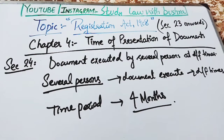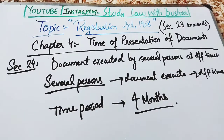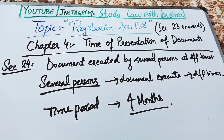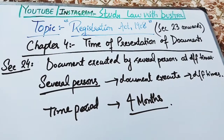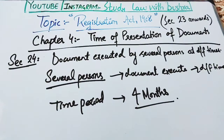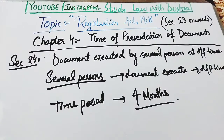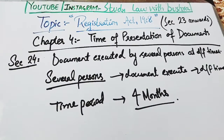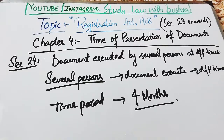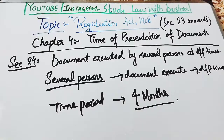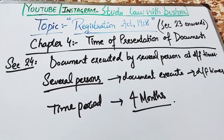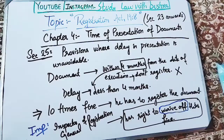Next है section 24 जो deal कर रहा है documents executed by several persons at different times. यह क्या कह रहा है कि जब बहुत सारे लोगों ने एक document को execute कराया लेकिन different times में, तो वो document registration के लिए within four months from the date of such execution भेजा जाएगा। यहाँ document की execution से मुराद यह है कि जिस time period में आपने वो deed sign की, उस signature के बाद within four months आप उस document को in the office of sub-registrar register कराओगे।